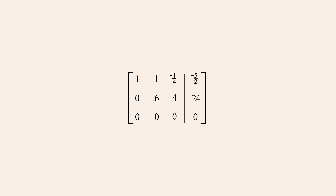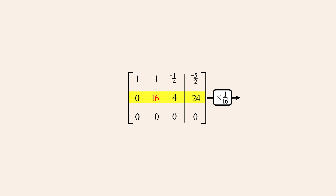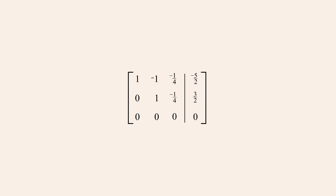We then move to the second column, changing the second row's leading entry to a one using a scale operation to multiply row two by one-sixteenth. This matrix now satisfies three of the four requirements for reduced row echelon form: rows containing all zeros are positioned at the bottom of the matrix, the first non-zero entry of each row is a one, and each leading entry lies to the right of the leading entry in the row above.